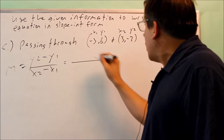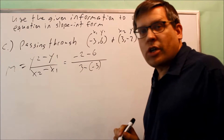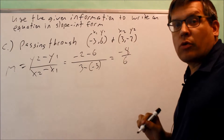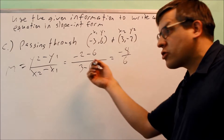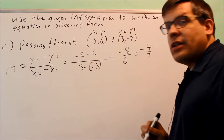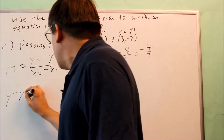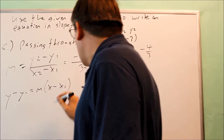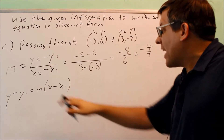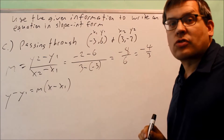Substituting: y2 minus y1 is negative 2 minus 6, and x2 minus x1 is 3 minus negative 3. We simplify to get negative 8 over 6. We reduce that fraction — always reduce to lowest terms when working with slope — and get negative 4 thirds. That's the slope. Now for the point-slope formula, we actually have a choice of which point to use; either point will give the same final slope-intercept answer. Since we already labeled the first point as x1, y1, we'll go ahead and use that one.